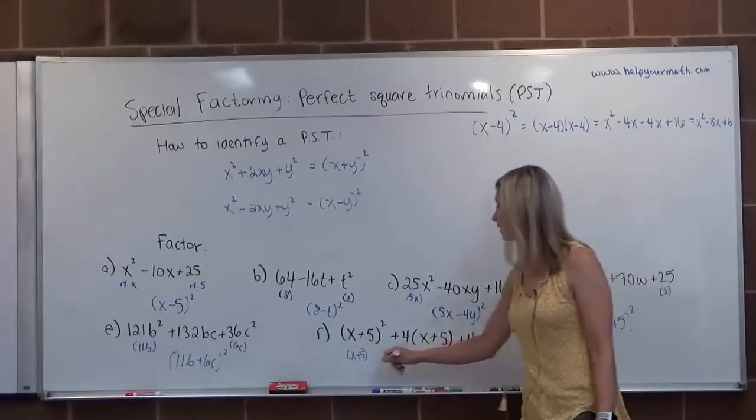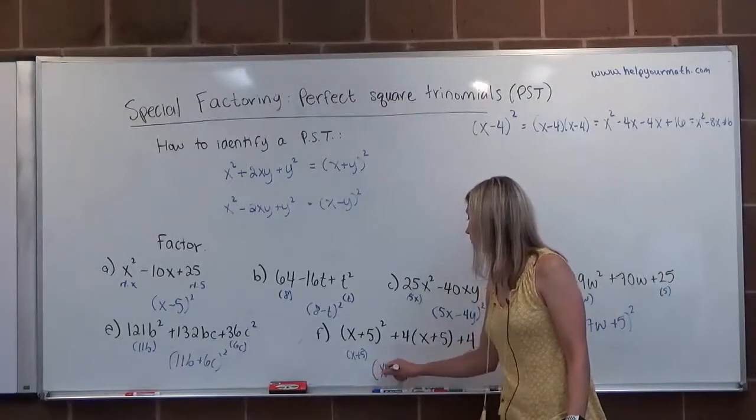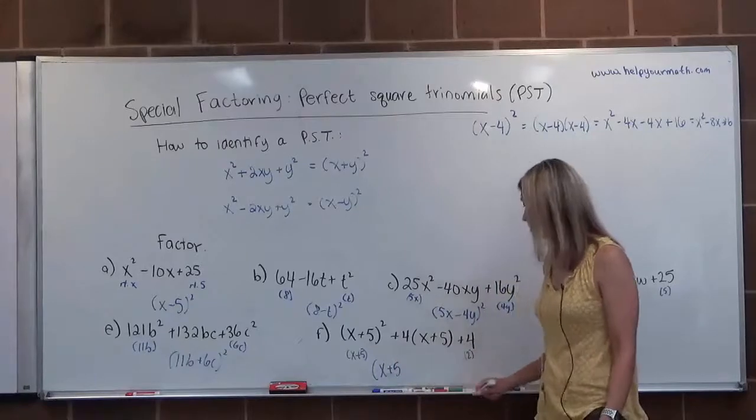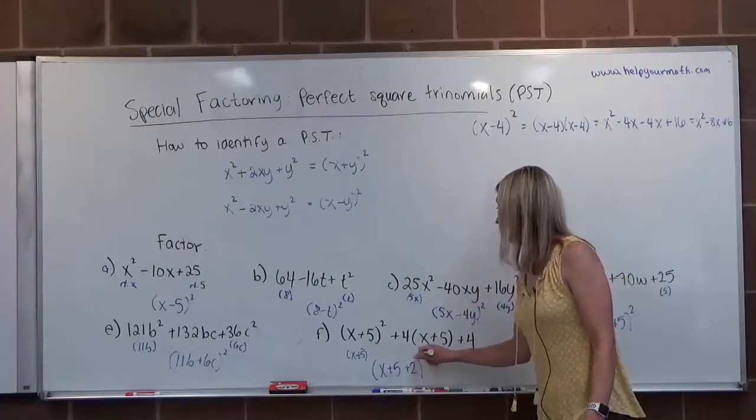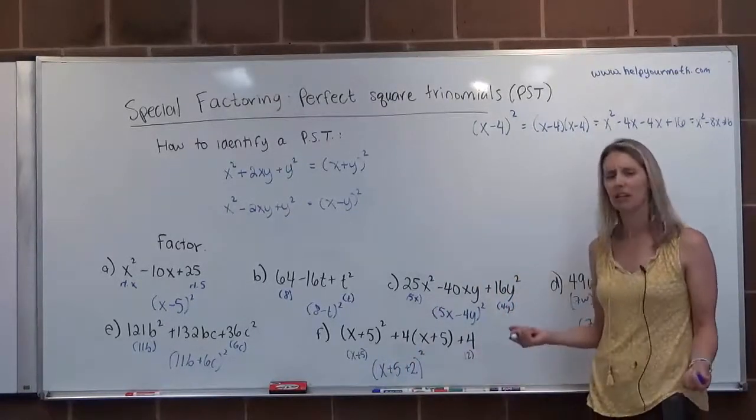So this is a perfect square. The first root is X plus 5, and the second root is 2 quantity squared.